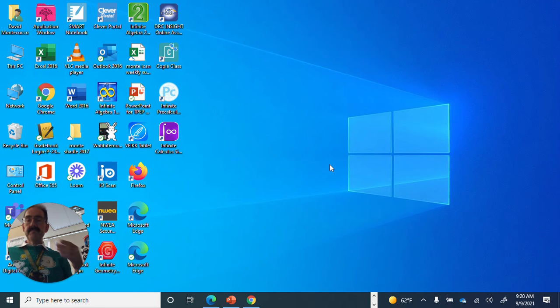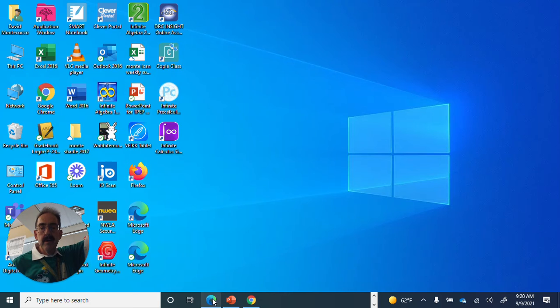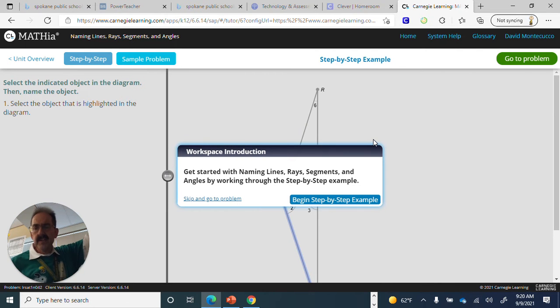All right, geometry folks, it's Monty here, and here we go. Let's get started on some Mathia for week number one. We're on a step-by-step. So the last one we worked on was lines, rays, and segments, and just notation. Let's try this step-by-step so we can see how it works.